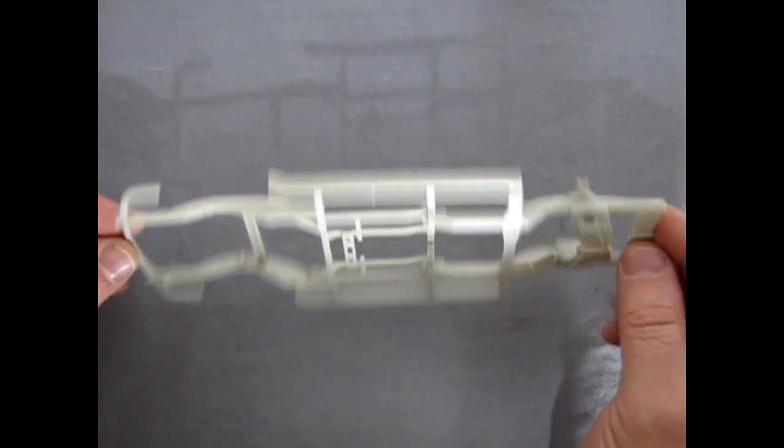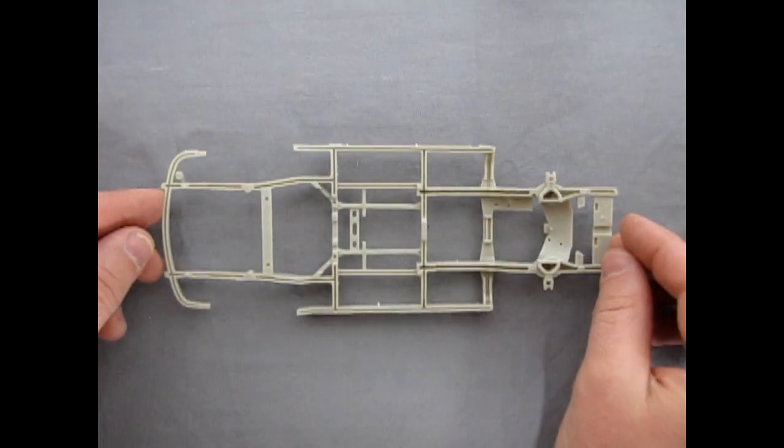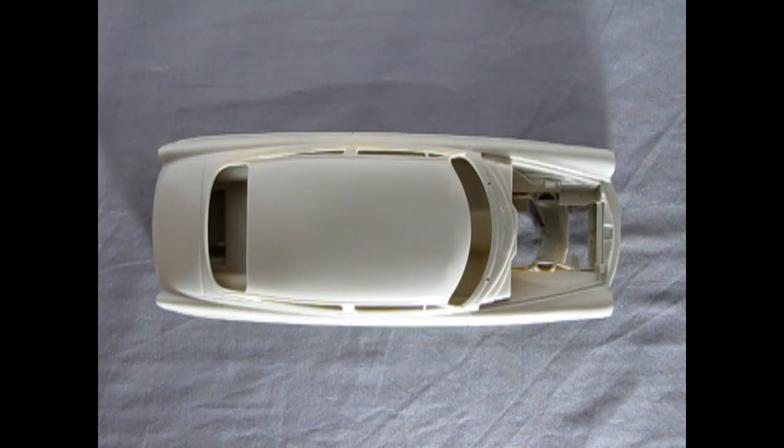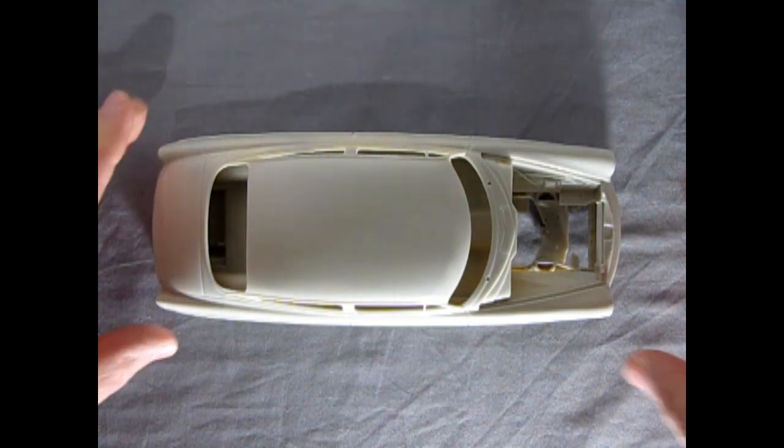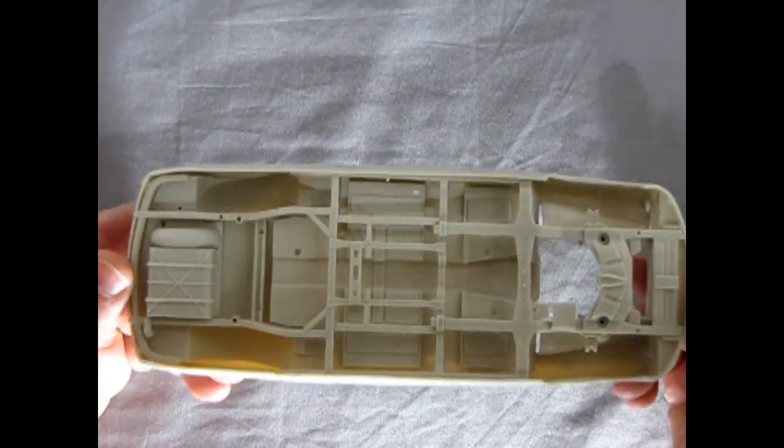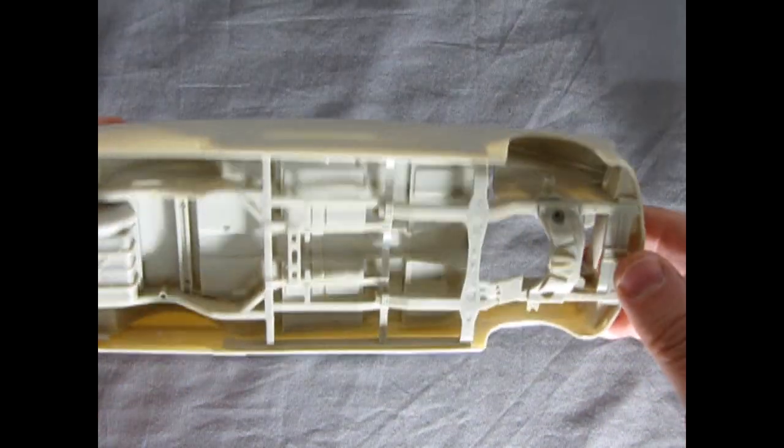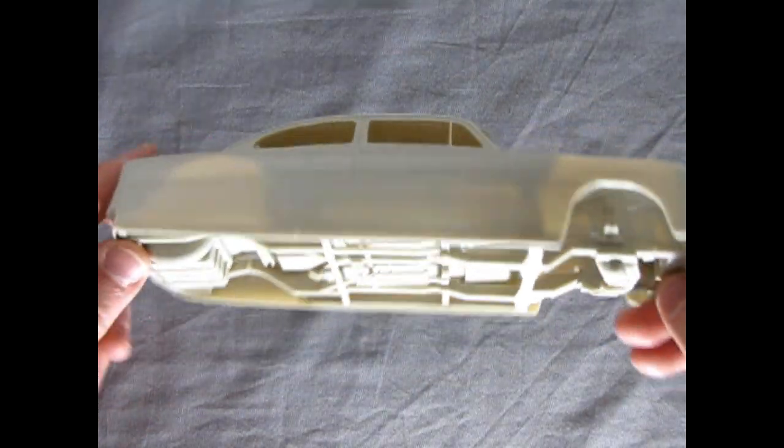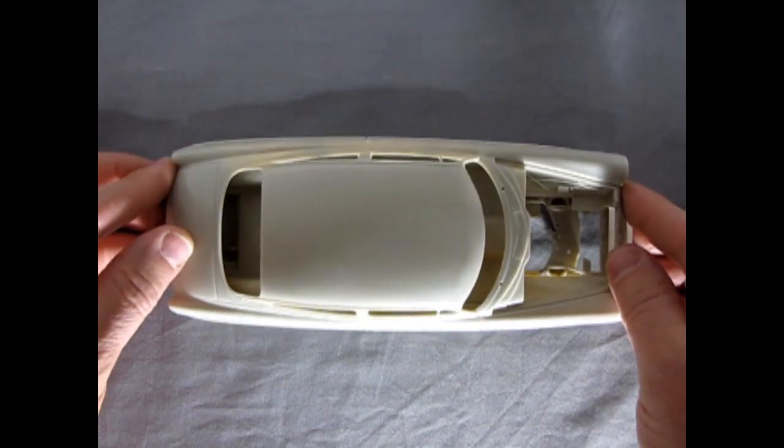But you may be wondering how these pieces all fit together when they go into the car. Here we have the body, the interior pan, and the frame all pieced together just loosely of course. But you can see how nice this fits underneath and how everything interlocks into little pins and holes. So again very nicely engineered by Mobius.